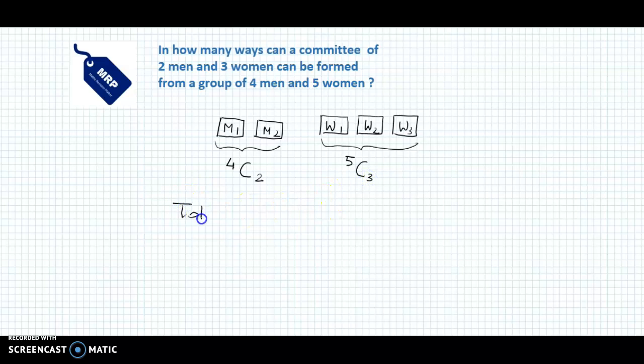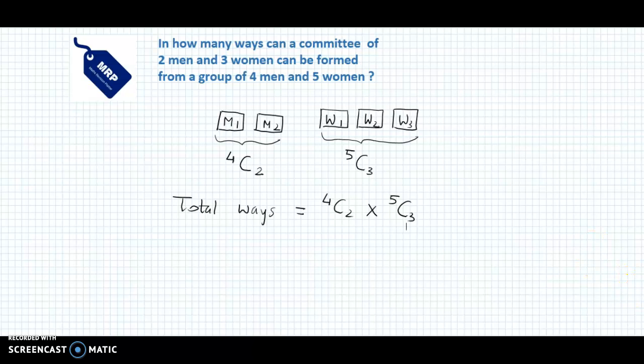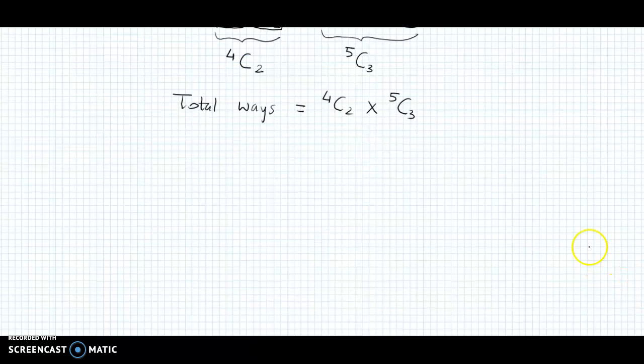So the total ways of forming the committee would be 4C2 into 5C3, because we need to select men and women. So we have applied the fundamental principle of counting.